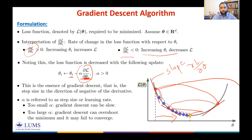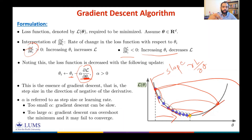We have built a basic intuition about gradient descent. Now we move toward defining the algorithm — the pseudo-code — which is just a formalization of what we have discussed.